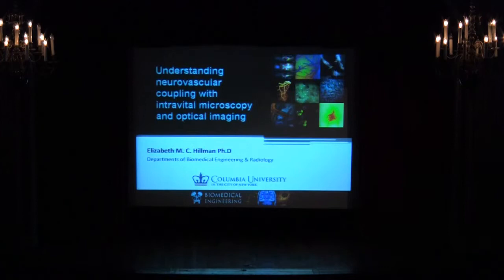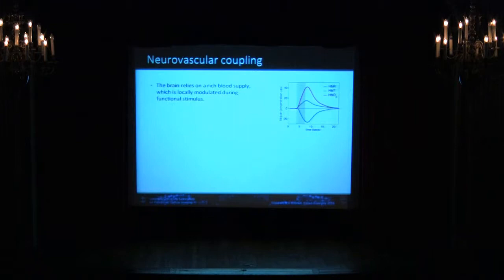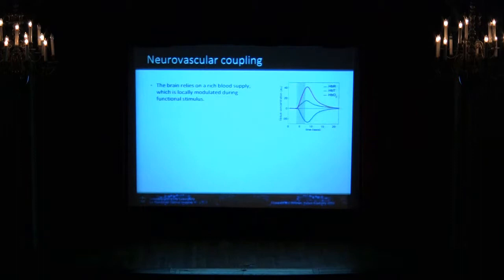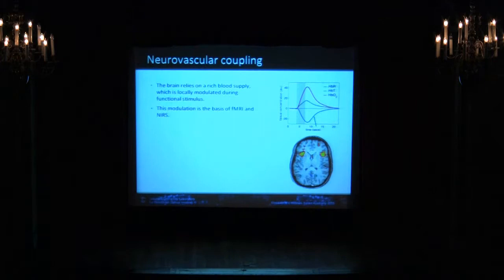I'd like to thank the organizers for inviting me — I apologize, I don't speak Italian. As Franco said, I'm going to be talking about understanding neurovascular coupling with intravital microscopy and optical imaging. What is neurovascular coupling? The brain relies on a rich blood supply which is locally modulated during functional stimulus. If I move my left hand, a region in my right somatosensory cortex will increase its blood flow — an increase in oxyhemoglobin, a decrease in deoxyhemoglobin, and a slight increase in total hemoglobin. This modulation is the basis of fMRI and near-infrared spectroscopy.